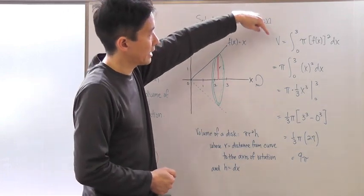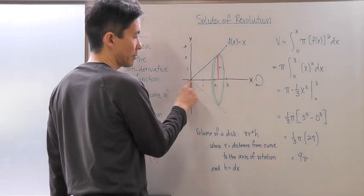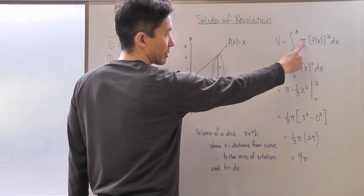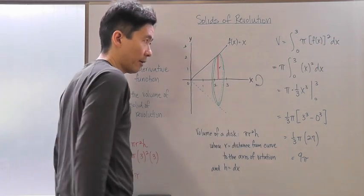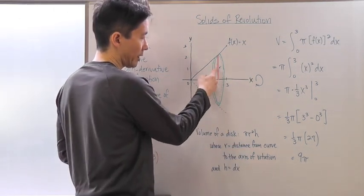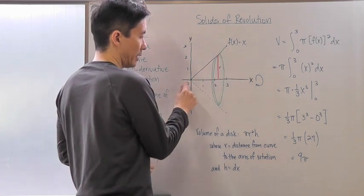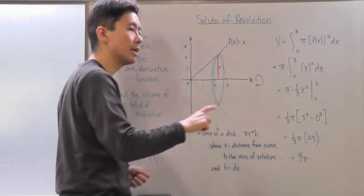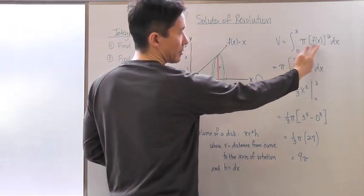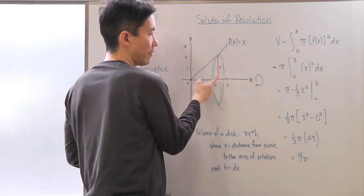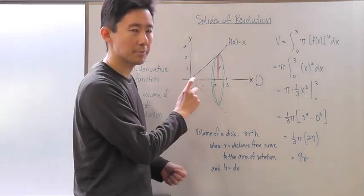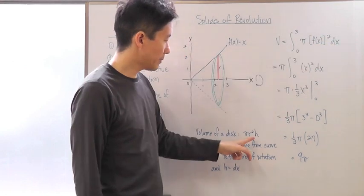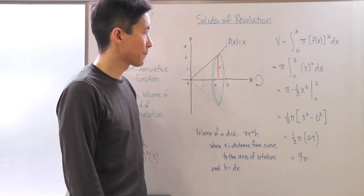The volume is going to be the integral from 0 to 3, using pi r squared times h for each disc. The radius r changes depending on where you are in the interval — at x = 1 the radius is 1, at x = 2 it's 2, at x = 3 it's 3. So r is represented by f(x), the distance from the axis of rotation to the curve.